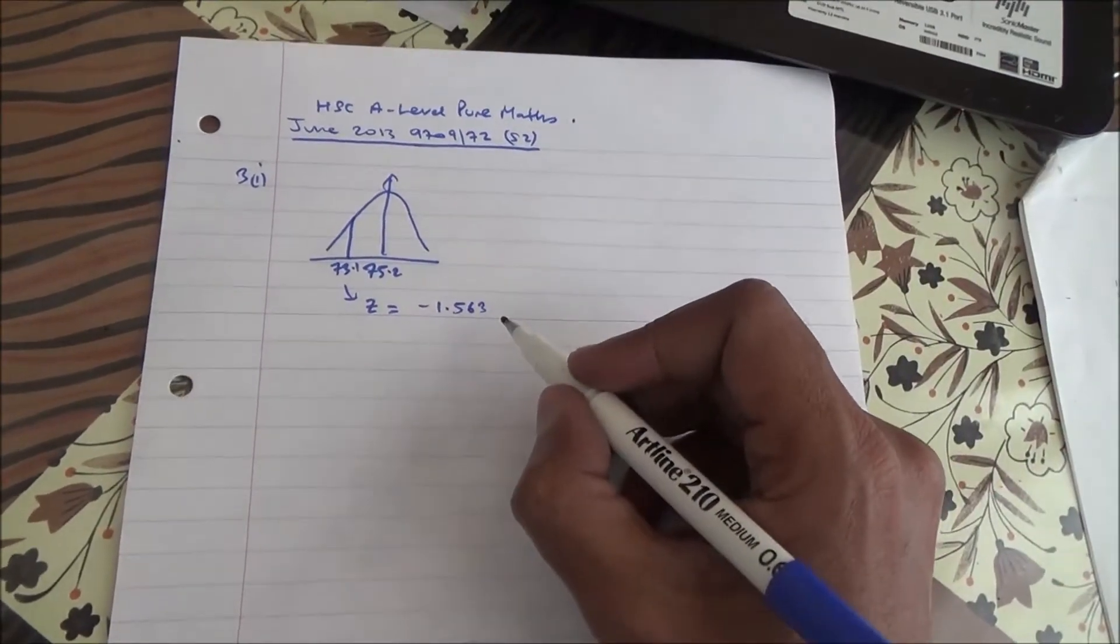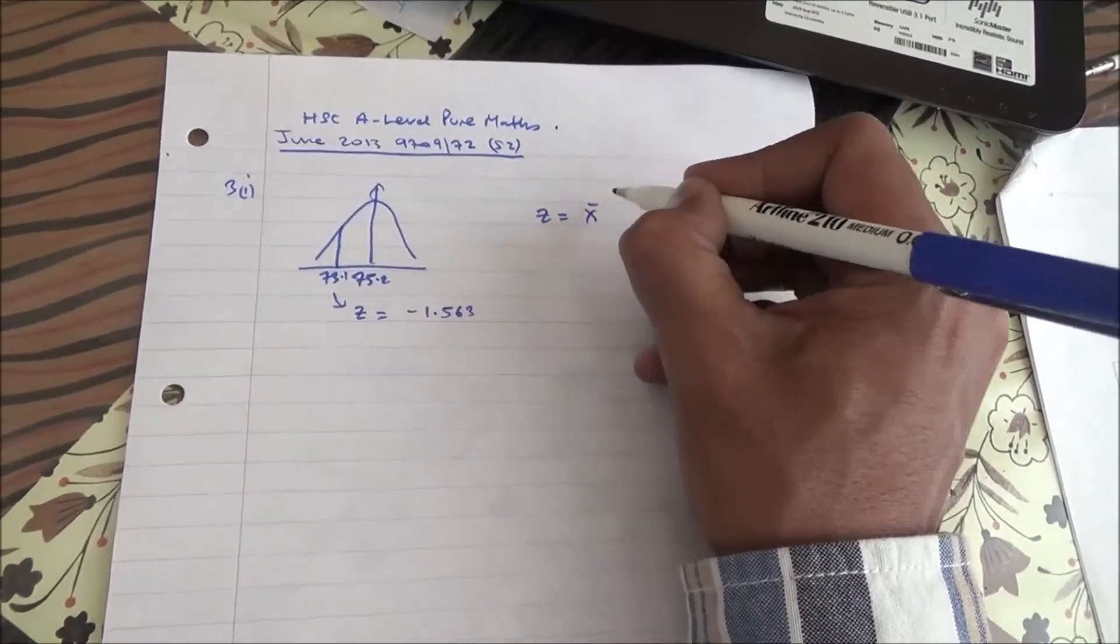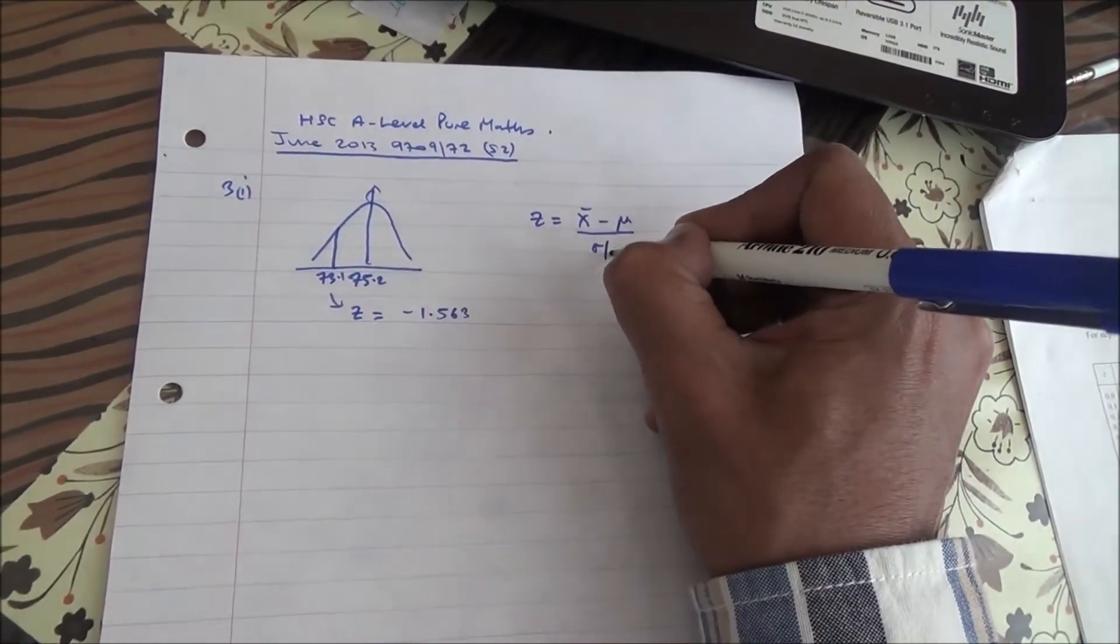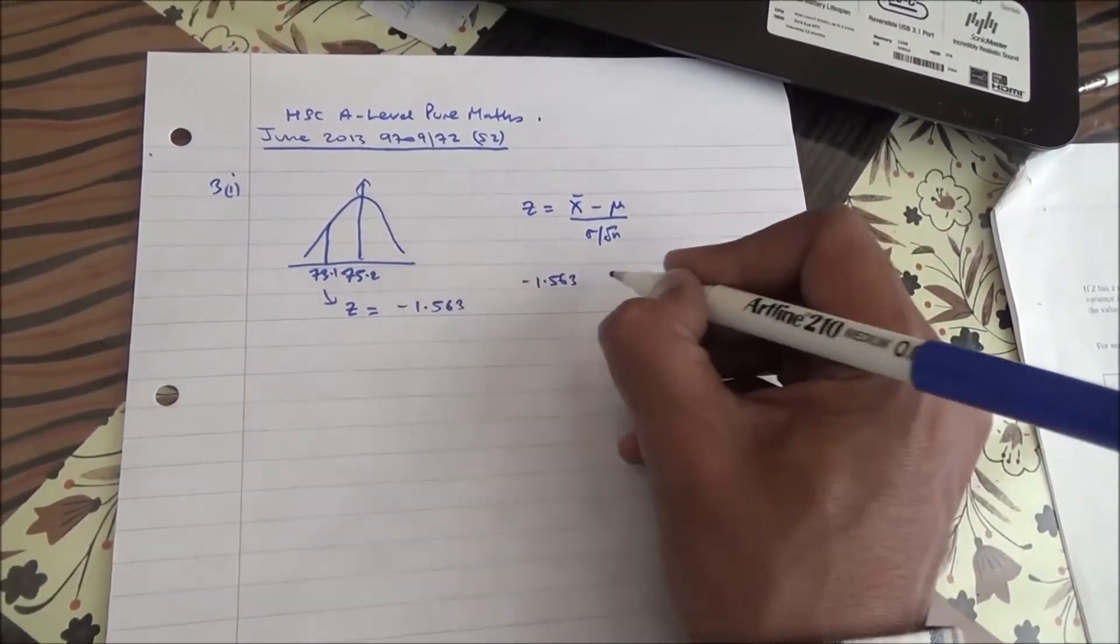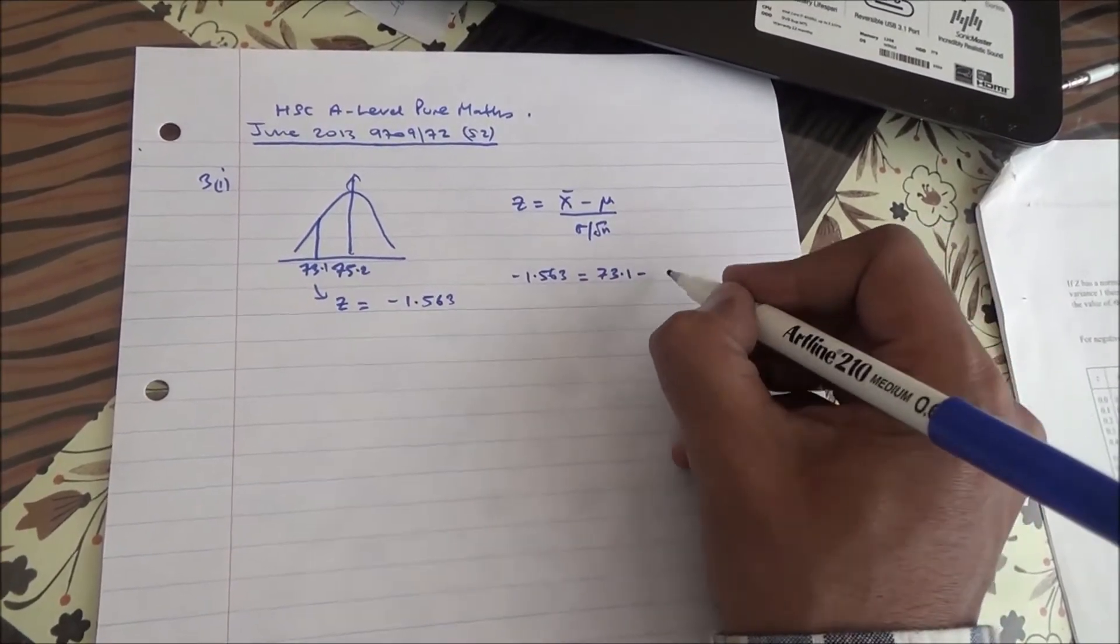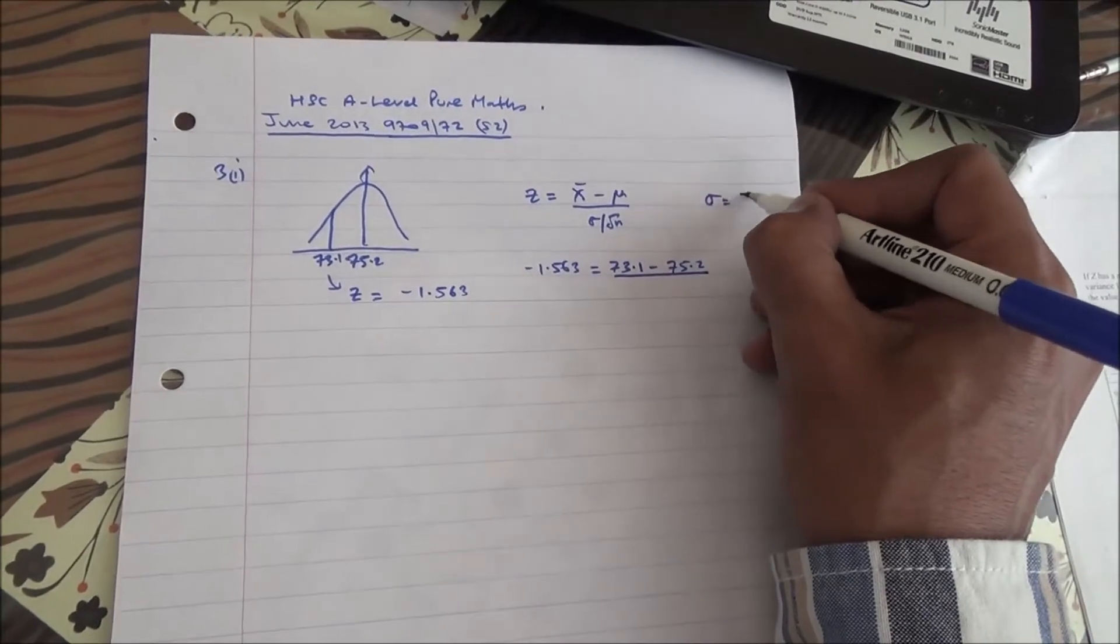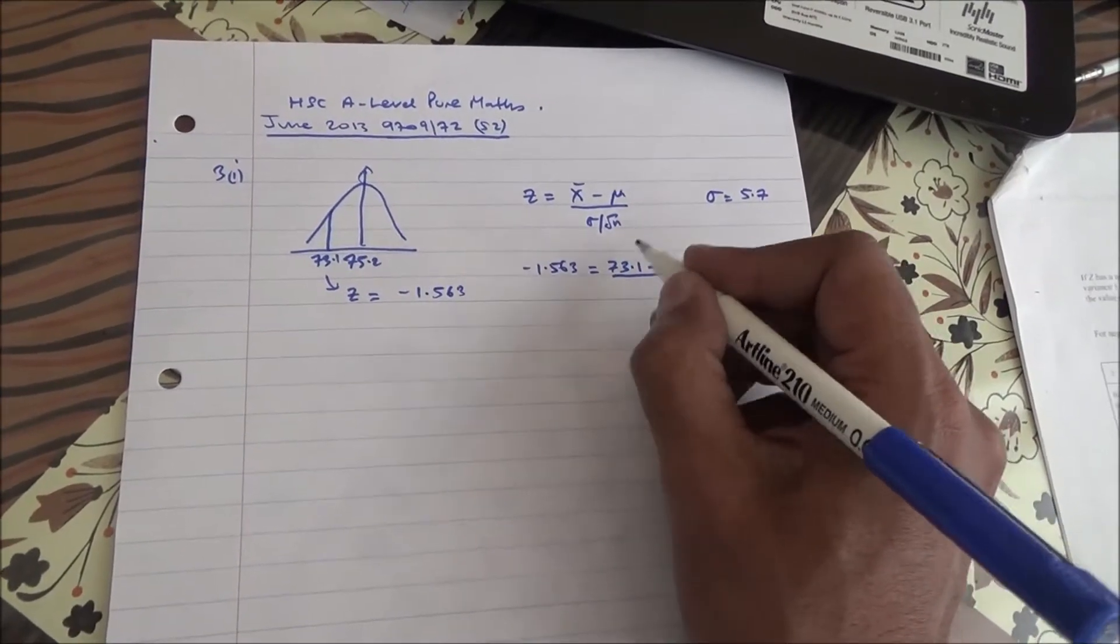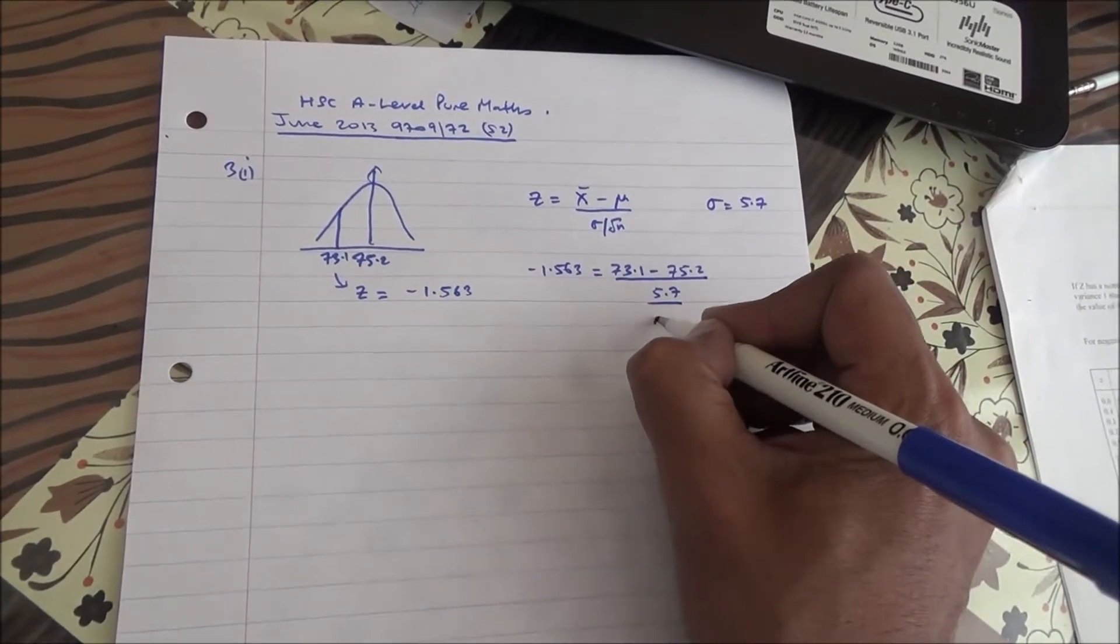Now, for this type of question, if we need to find n, what we need to realize is that the test statistic is the observed mean minus the population mean over the standard deviation divided by the square root of n. And all the information are given here. So this will be our assumption, because without this, we can't find the value of n.